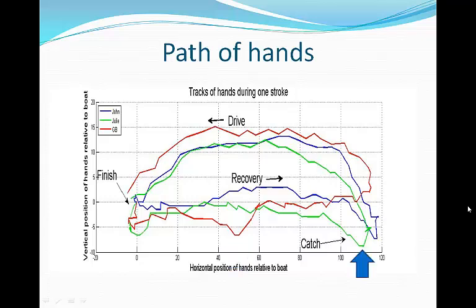At the catch, you can really see how much my hands dip down vertically by looking at the green line. John's also dip, but not as much as mine, while the Britons' hands, shown in red, stay perfectly level before they drop the blade in the water. You can imagine the wasted time for us to be moving our hands down like this. During the drive, we're all pretty similar, except that the Britons pull their hands in higher toward the finish. This could be because their rig is higher than ours.